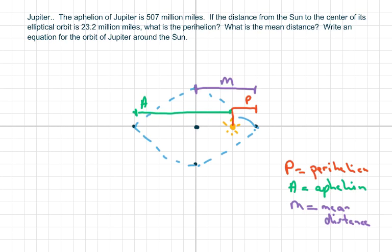Hi everyone, we're going to do an astronomy type problem with ellipses and some of the vocabulary you need to know. Perihelion means the shortest distance from the planet, in this case Jupiter, to the Sun.